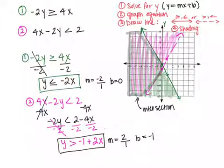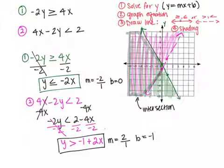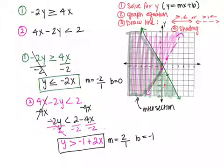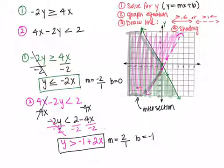So what you have to do is: solve your equations, making sure y is isolated first. Then graph the equations. Then draw the lines — based on what type of inequality it is, draw either a solid or dash line. Then do some shading. After you shade, find where the two colored regions meet — where both colors show up — and box in that region and declare it as your intersection.